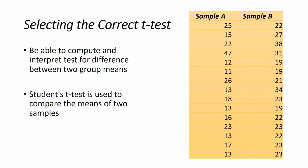Let's remind ourselves what we are trying to do with a Student's t-test. Let's say we've got two samples, sample A and sample B, and we'd like to be able to compute and interpret a test for differences between these two groups. The appropriate test is a t-test, and Student's t-test is used to compare the means of these two groups. Unfortunately, it's not quite straightforward in that there are different types of t-tests, so we need to know which one is the right one to choose.